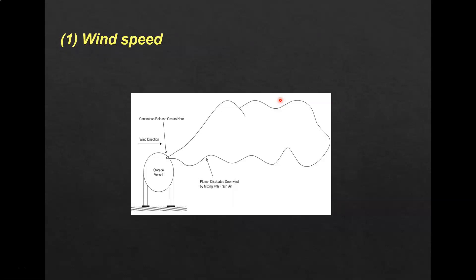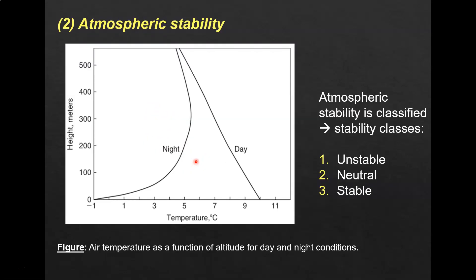The first parameter we look at is wind speed, because wind speed will affect the direction of the continuous release. For example, in the plume model, wind speed affects how the continuous plume behaves. The second parameter is atmospheric stability — whether it is unstable, neutral, or stable. You need to determine what the atmospheric condition is at the time of release, because the stability class will determine what type of coefficient you use in your gas dispersion calculation.